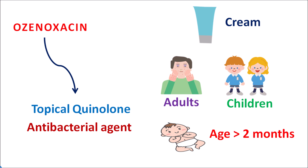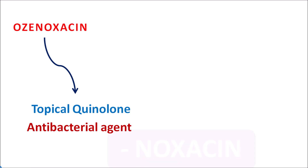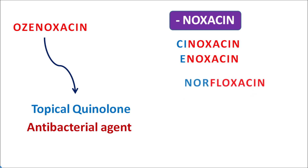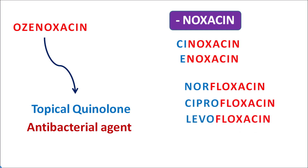We have discussed that this drug is one of the quinolone antibiotics. Quinolone medications are widely used as antibacterial agents, and among these ozenoxacin is one of the newer agents. Here we can observe the suffix '-noxacin', which can be observed in first generation quinolone antibiotics. For instance, cinoxacin and enoxacin are first generation antibacterial agents belonging to the quinolone category — they share the same suffix '-noxacin'. Later development of fluoroquinolones resulted in drugs like norfloxacin, ciprofloxacin, and levofloxacin, all having the suffix '-floxacin', indicating they are fluoroquinolones. Ozenoxacin is a quinolone but not a fluoroquinolone since it does not have a fluorine atom in its structure.